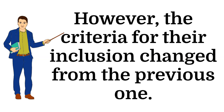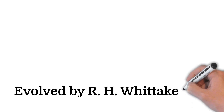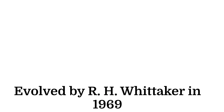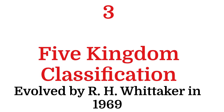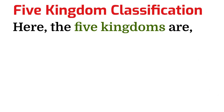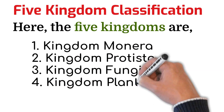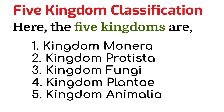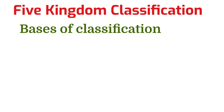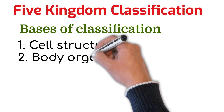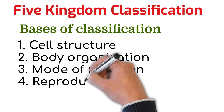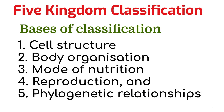Now, let's discuss the new system of classification evolved by R.H. Whittaker in 1969, that is, Five Kingdom Classification. The five kingdoms are Kingdom Monera, Kingdom Protista, Kingdom Fungi, Kingdom Plantae, and Kingdom Animalia. The basis of classification in five kingdom classification are cell structure, body organization, mode of nutrition, reproduction, and phylogenetic relationships.